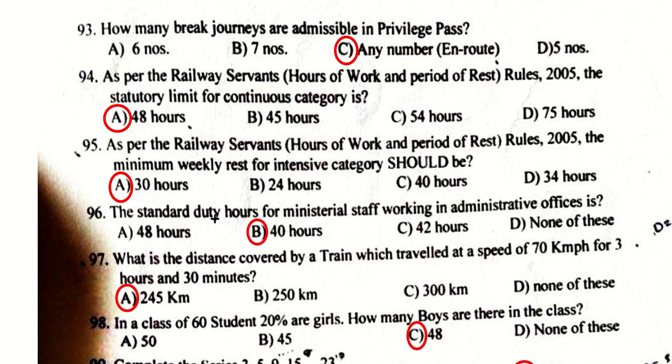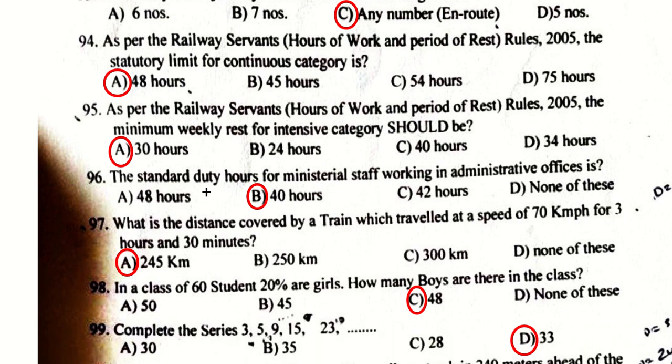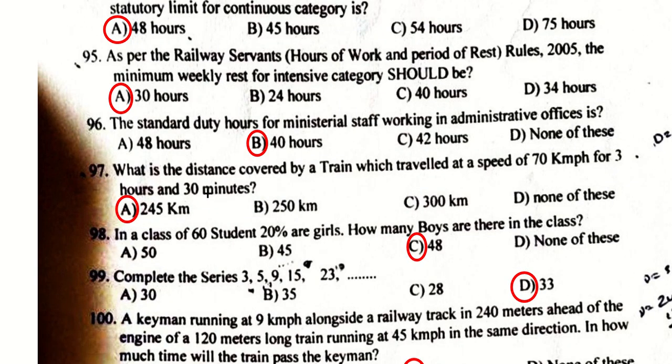As per Railway Servants HOER Rules 2005, the minimum weekly rest for the intensive category should be 30 hours. The standard duty hours for ministerial staff working in administrative offices is 40 hours. The distance covered by a train traveling at 70 kmph for 3 hours 30 minutes is 245 km.